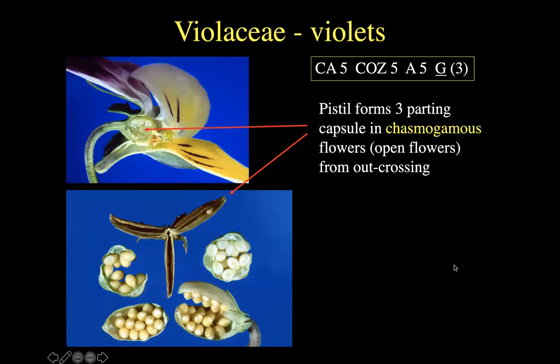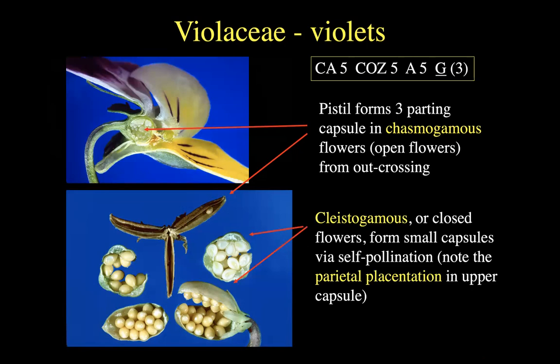That's what we find in what are called chasmogamous flowers — above ground, showy, pretty, and involved in outcrossing, receiving pollen from others. Violets do this crazy thing where many species have a second set of flowers that literally only open underground, pollinate themselves underground, and form a small capsule whose seeds disperse there underground. This second set of flowers is called cleistogamous — super crazy. If you're ever in a place with a lawn full of violets, go ahead and dig one up and see if you can find these weird ghost flowers underground.